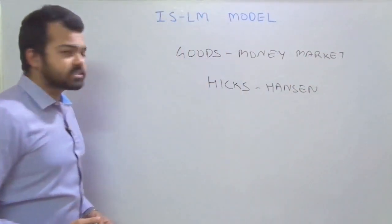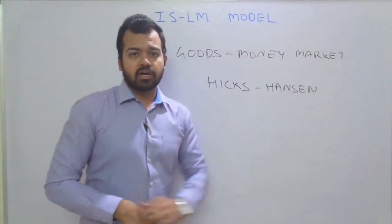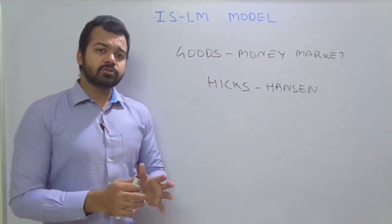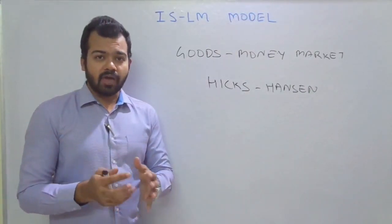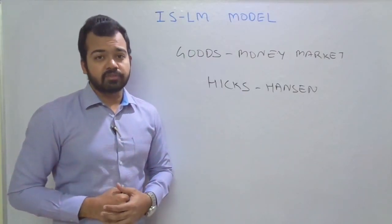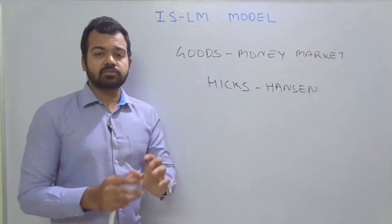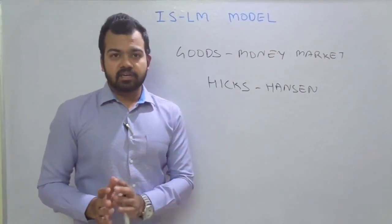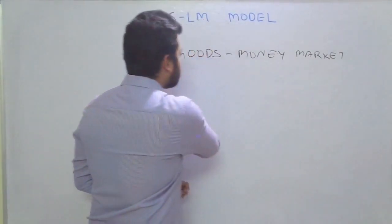The goods market represents investment in goods and services, and the money market represents the demand for and supply of money. According to Keynes, when you demand investment goods you have to borrow funds from the financial sector, which depends on the rate of interest. That is why integrating these two markets is vital for modern economics.